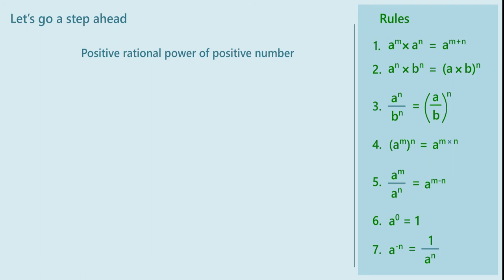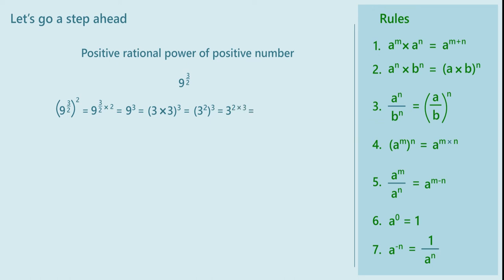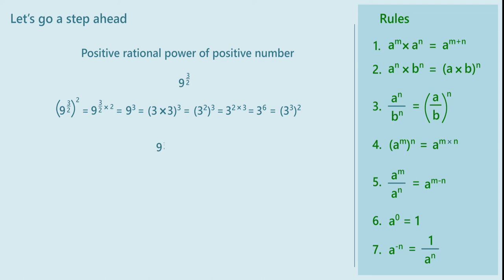Let us try one more. Which number is represented by 9 raised to 3 upon 2? Working similarly, raising 9 raised to 3 upon 2 to power 2, we obtain 9 raised to 3 upon 2, raised to 2, equals 9 raised to 3 upon 2 into 2, which is 9 raised to 3. This equals 3 squared raised to 3, which is 3 raised to 2 into 3, equals 3 raised to 6, or 3 cubed whole raised to 2. So we can write 9 raised to 3 upon 2 as 3 raised to 3, which equals 27.